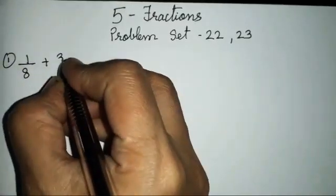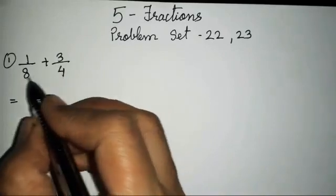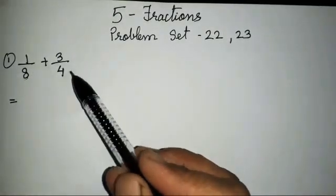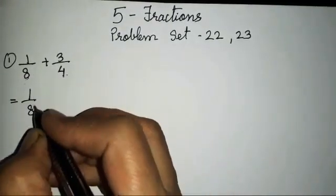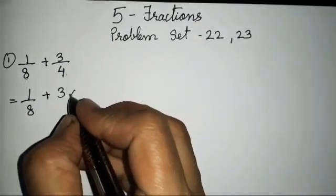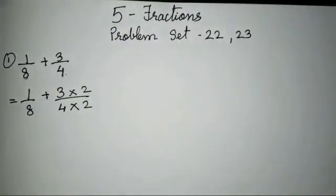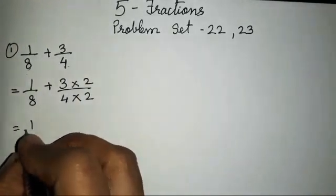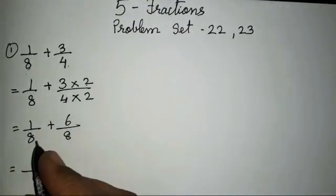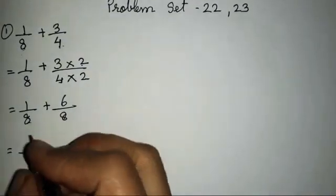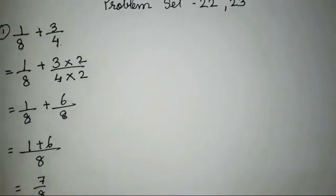The first question is 1/8 plus 3/4. For addition, you have to check whether the denominators are equal. In 8's table, 4 will not come, but in 4's table, 8 will come. So we keep the first fraction as it is and multiply 3/4 by 2/2 to get 6/8. Now 1/8 plus 6/8 equals 7/8.